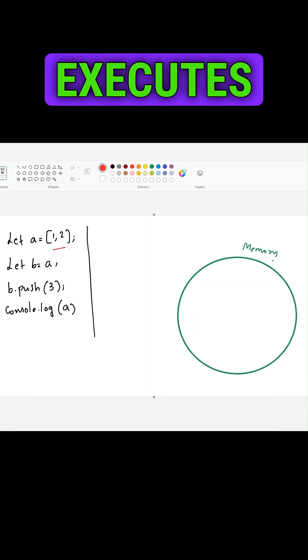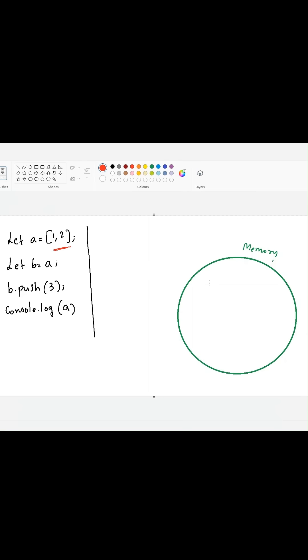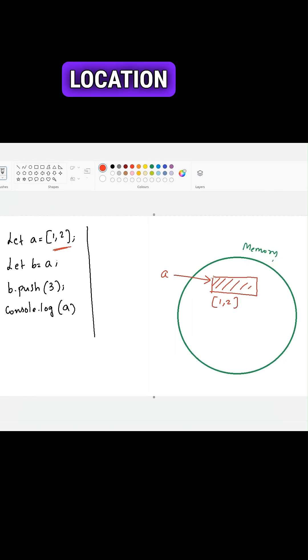When JavaScript engine executes this first line, it will create or allocate some space in the memory with value one comma two. Now A will be pointing out to this particular location in the memory.